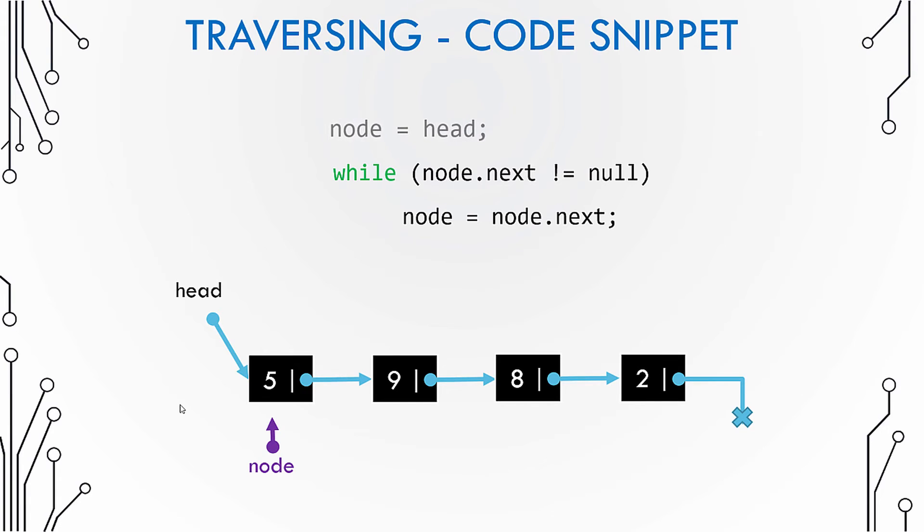Now in this case we are traversing the list until there is no element left to traverse. The while statement checks whether the next pointer of the node is null or not. This is to check whether we have reached the end of the list or not.